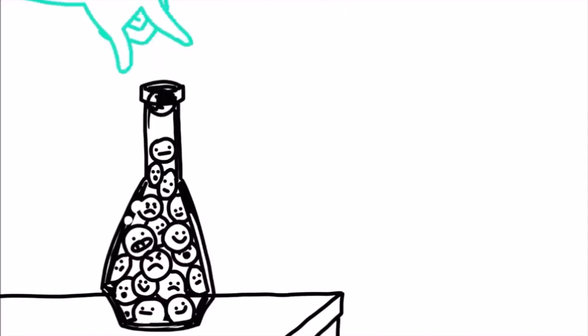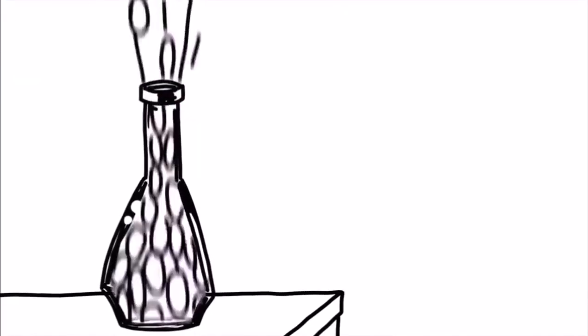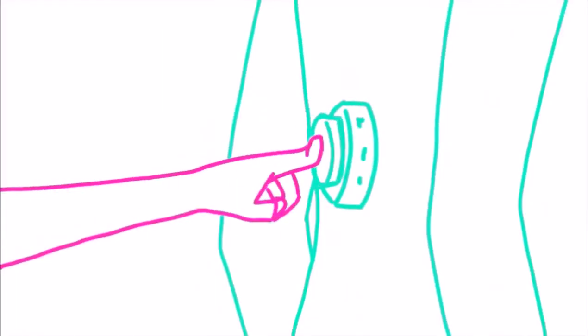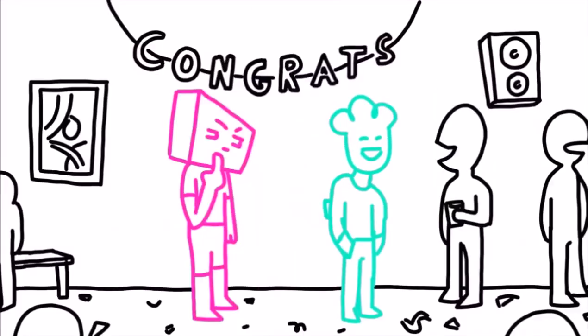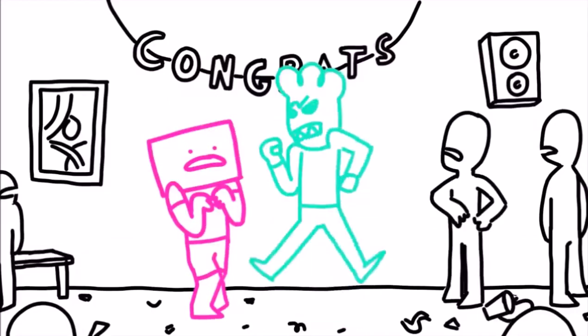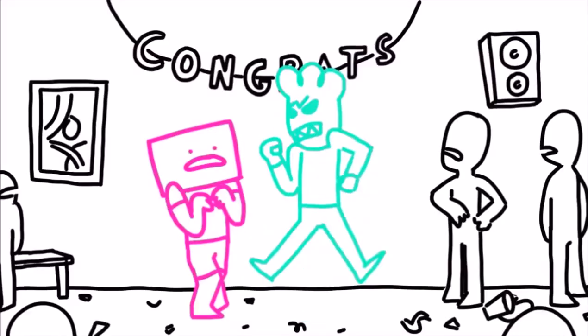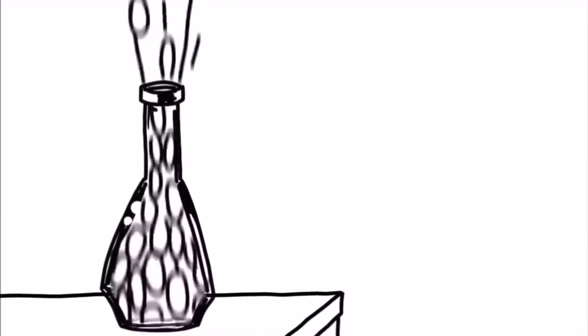4. The introvert blows up over small things. Introverts naturally bottle up their feelings. However, even they have their limits. You could be the unfortunate one that pushes their button. One minute they're fine, the next they're screaming their lungs at you. What's important to note about this burst of anger is that it's been bubbling under the surface for a long time. It may appear to come from nowhere and could be over something trivial, but this is not the case. The introvert has reached their limit.